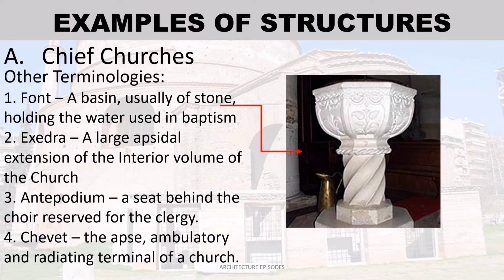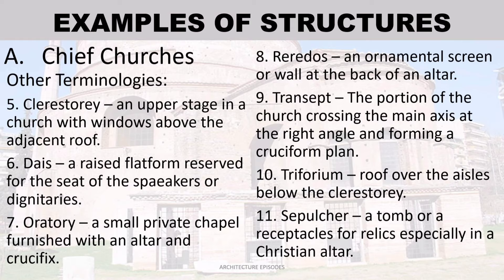Font — a basin, usually of stone, holding the water used in baptism; also, a large apsidal extension of the interior volume of the church. Ante podium — a seat behind the choir reserved for the clergy. Chevet — the apse, ambulatory, and radiating chapels at the terminal end of a church. Clerestory — an upper stage in a church with windows above the adjacent roof. Dais — a raised platform reserved for the seat of speakers or dignitaries.